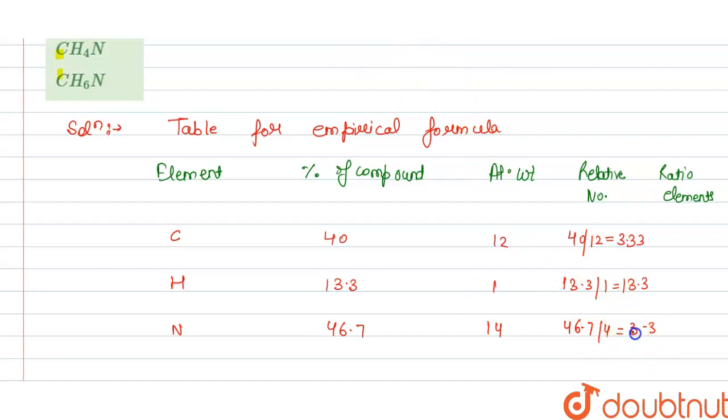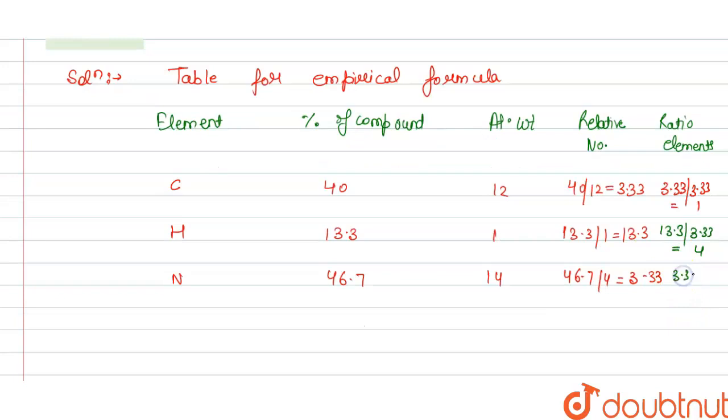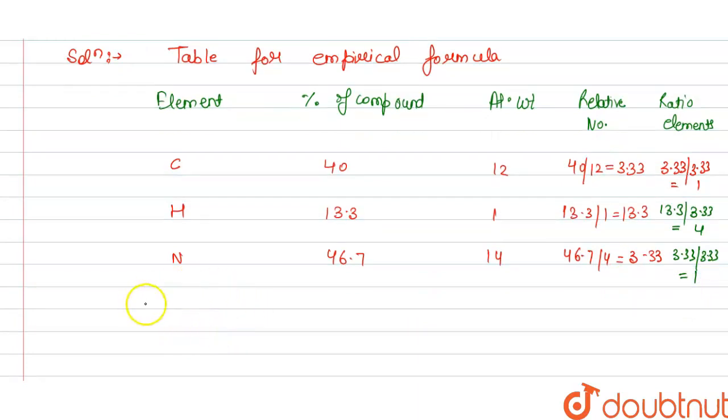So we have to take the least relative number and divide each of them. So 13.3 divided by 3.33, the ratio is 4. And 3.33 divided by 3.33, the ratio is 1.